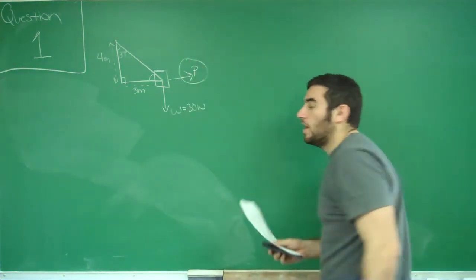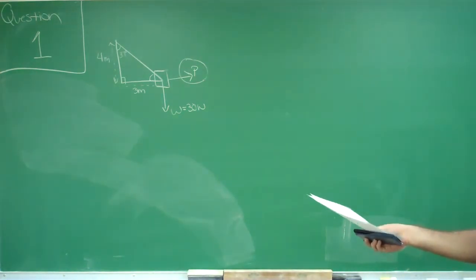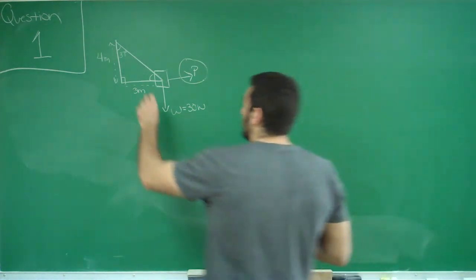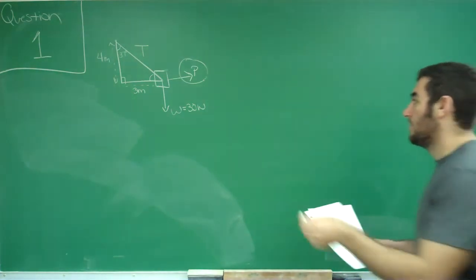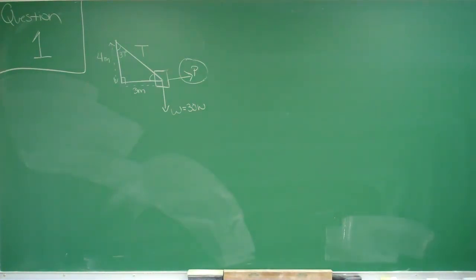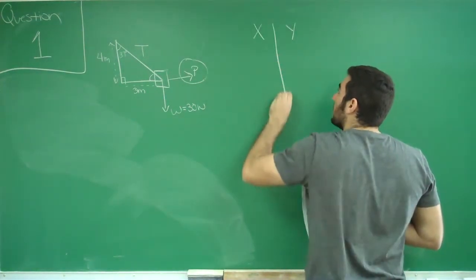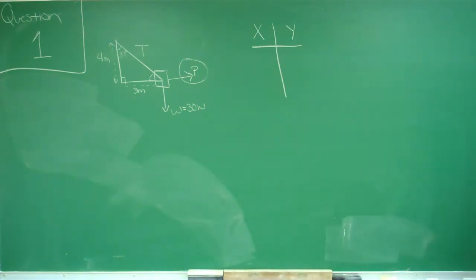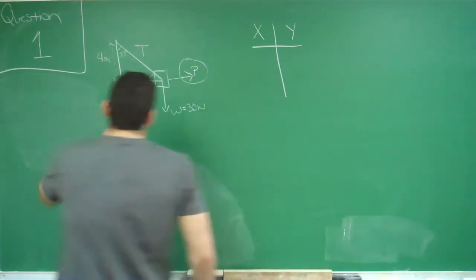We're looking for this pulling force P and how much it's holding versus this tension force, which is holding this 30-newton block. The way I solved it, I use my charts where I break everything up into x and y directions, utilizing whatever forces I need. One thing Dr. Sullivan really loves in these classes are 3-4-5 triangles.